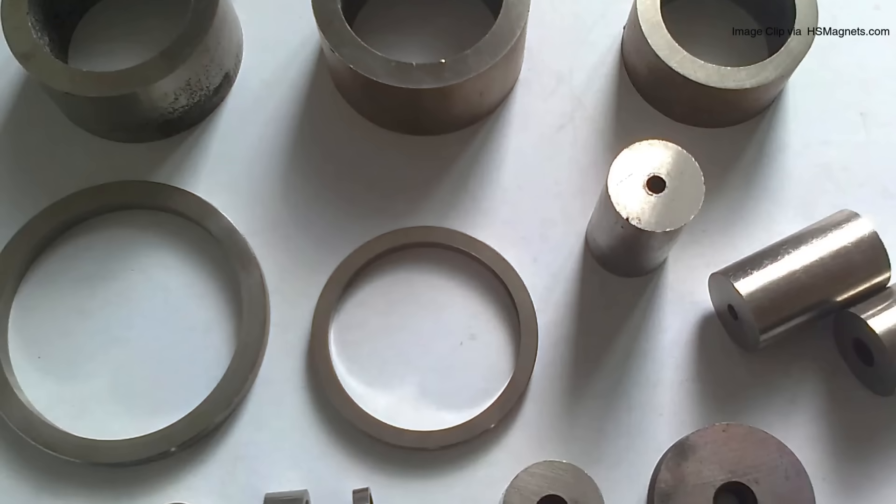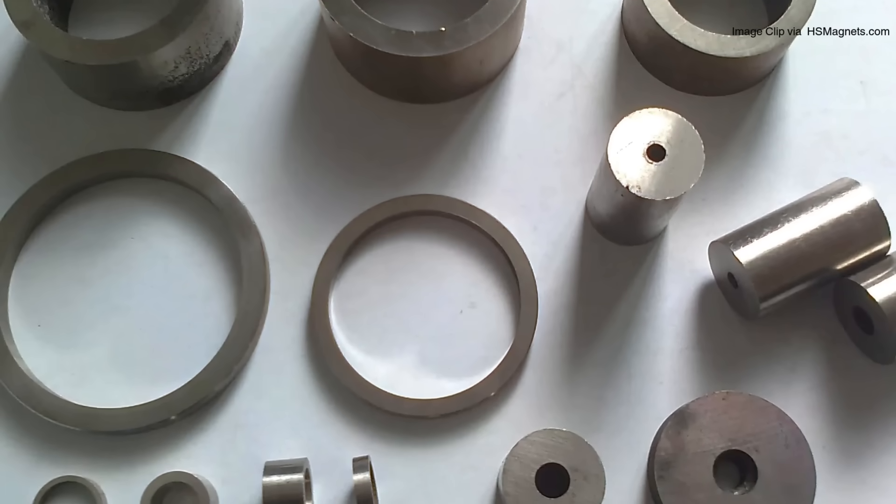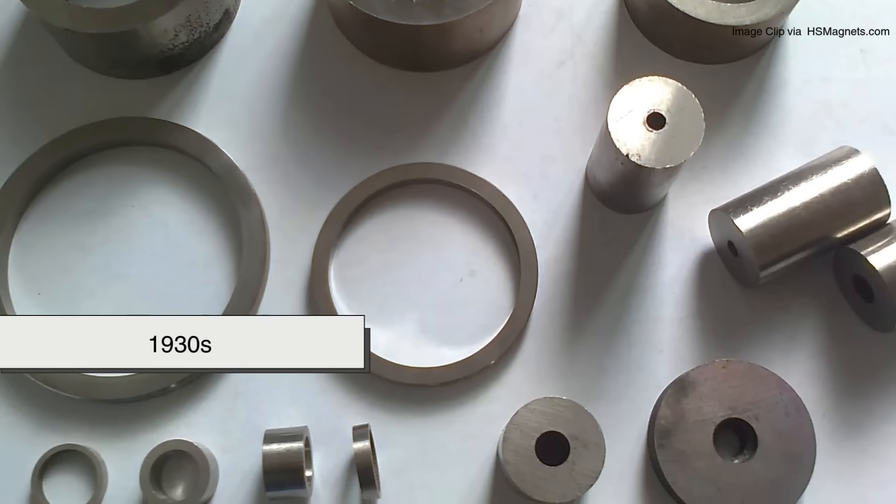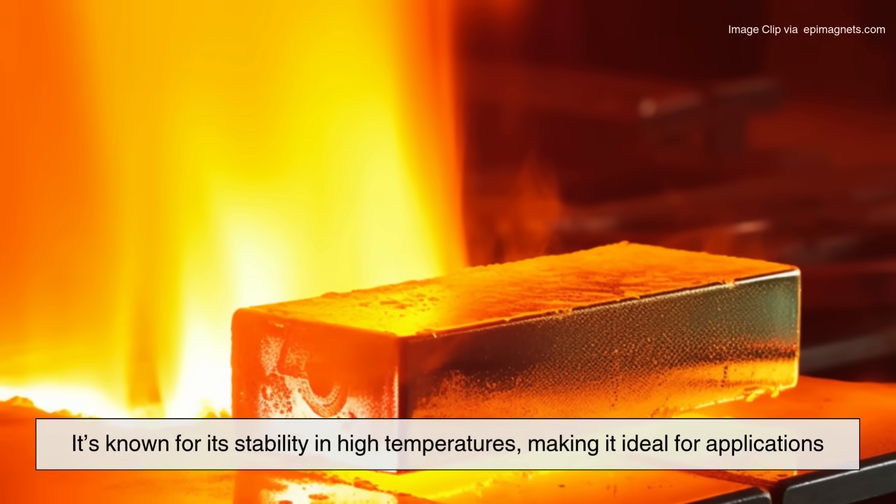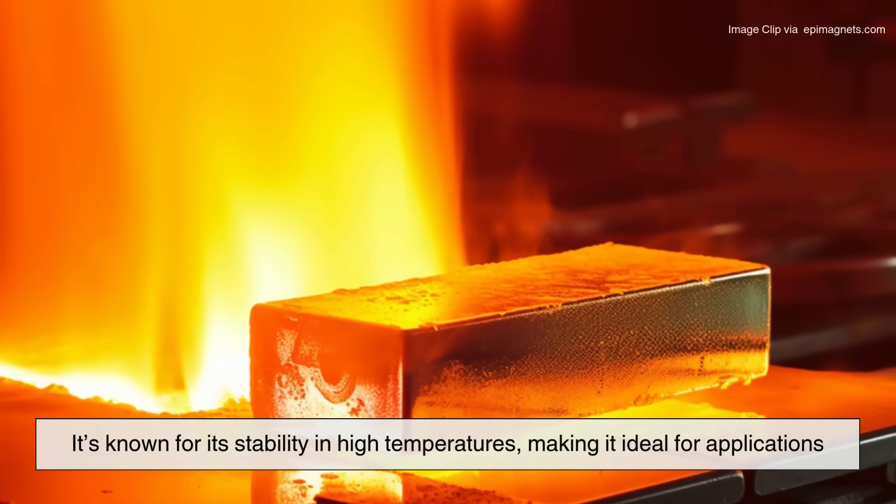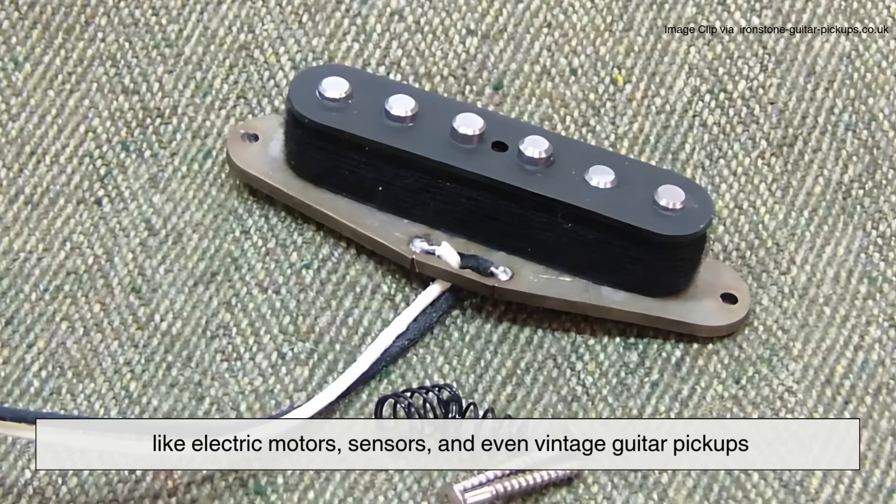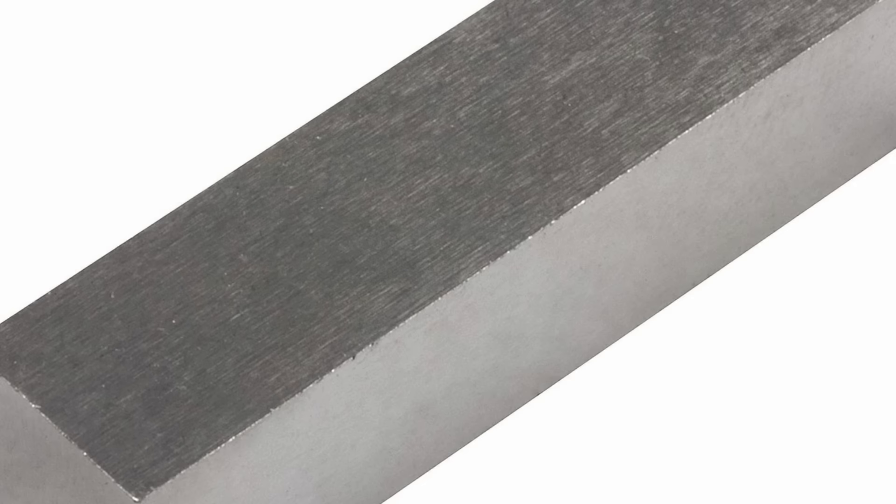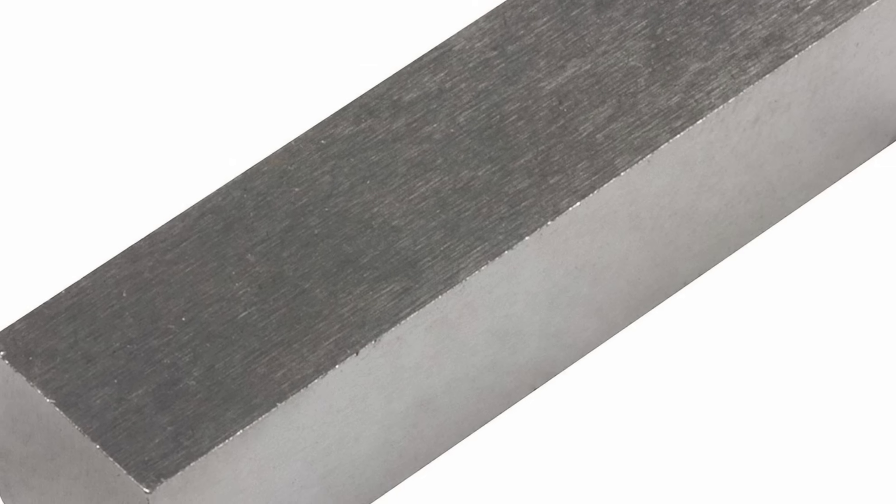Unlike modern rare earth magnets, Alnico has been around since the 1930s. It's known for its stability in high temperatures, making it ideal for applications like electric motors, sensors, and even vintage guitar pickups. But how does this raw mix of metals become a magnet?